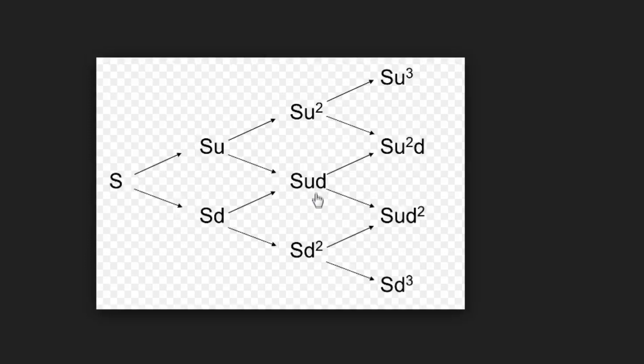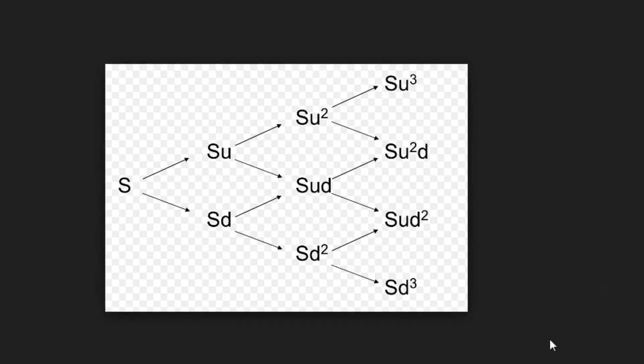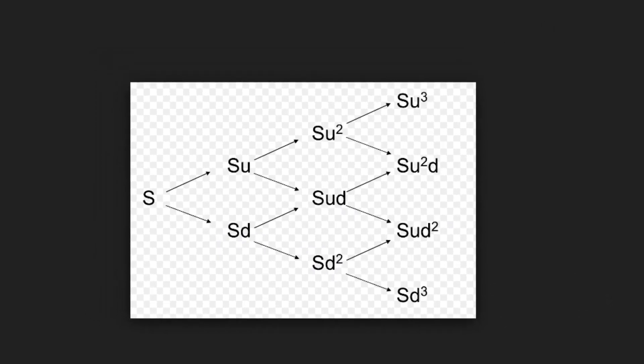It could go down from up, so S times U times D, which is up times down. Or it could go down again. And this just branches out over and over, and this is what's known as a binomial tree.